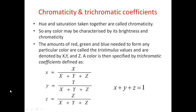Any color can be distinctively characterized by three attributes: brightness, hue, and saturation. Hue and saturation taken together are called chromaticity. So, the previous statement can be reiterated as: any color can be characterized by its brightness and chromaticity, because chromaticity itself contains the hue and saturation attributes. Together with brightness, these can totally determine the color distinctively.